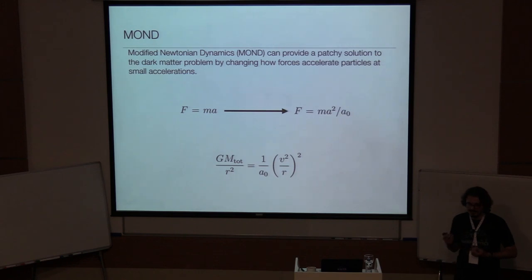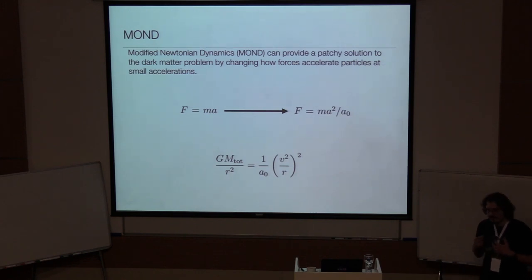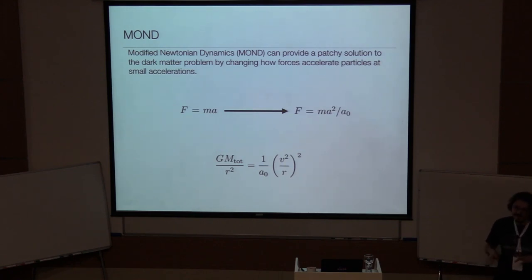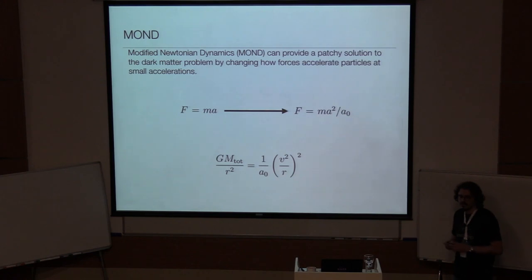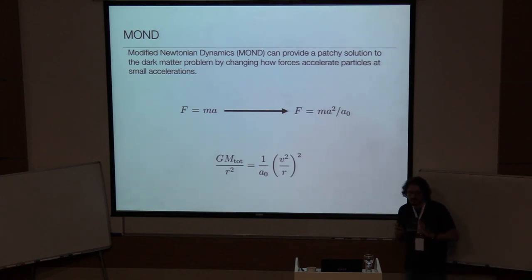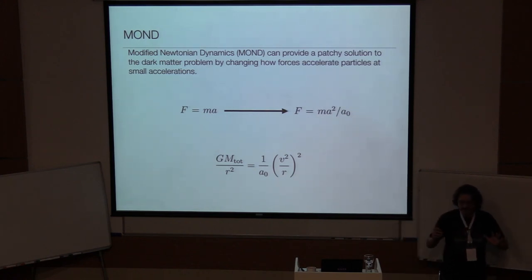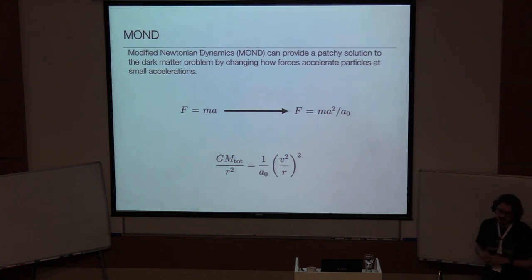Prior to recombination, the only observational evidence we have is from Big Bang nucleosynthesis, which only tells us about baryonic abundance. We learn pretty much all we know about dark matter from either current galaxies — studying their rotation curves, how diffuse they are, the abundance of galaxies — or from the CMB. But these are all late-time effects.